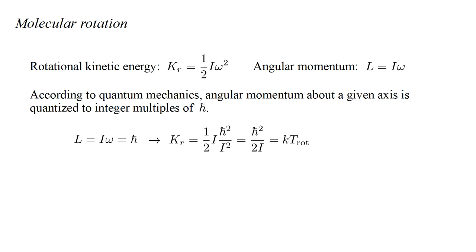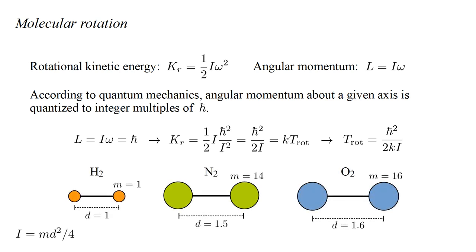Then we can set this energy equal to Boltzmann's constant K times a temperature T-rotational. This defines the rotational temperature as H-bar squared over 2KI. Let's examine the implications for the three diatomic molecules hydrogen, nitrogen, and oxygen. If we take the mass of a hydrogen atom to be one, then the nitrogen and oxygen atomic masses are 14 and 16. If we take the hydrogen molecule bond length to be one, then the nitrogen and oxygen bond lengths are 1.5 and 1.6. Since moment of inertia is proportional to M times D squared, the nitrogen and oxygen moments are about 30 and 40 times the hydrogen values.